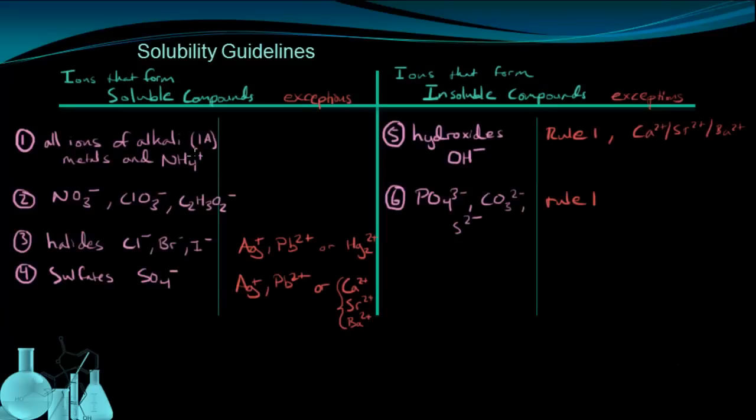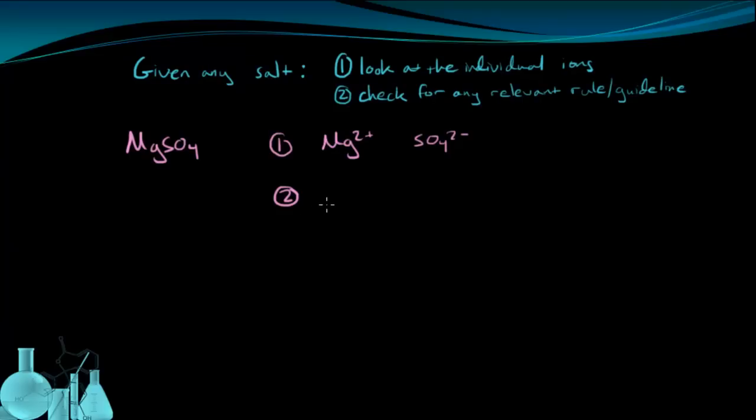So first, we're going to look for magnesium, some rule that may apply to magnesium. If I look through my list here, we have alkaline metals as positive ions. But that's really the only rule for positive ions, and magnesium is not an alkali metal. It's a group 2 metal.